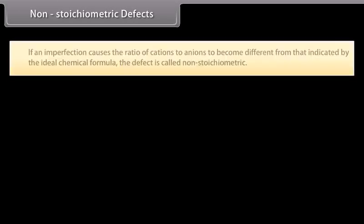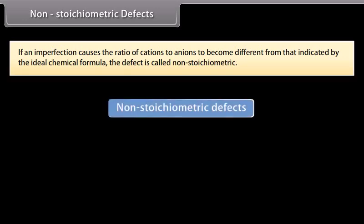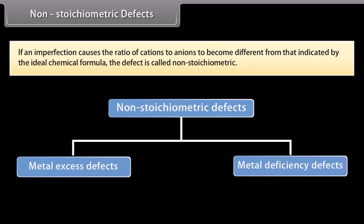Non-stoichiometric defects: If an imperfection causes the ratio of cations to anions to become different from that indicated by the ideal chemical formula, the defect is called non-stoichiometric. These are two types: metal excess and metal deficiency.